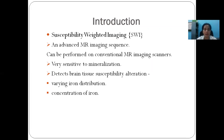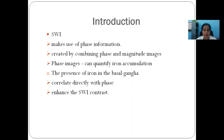For that, we need a highly sensitive sequence like SWI, which is a very advanced MR sequence performed on conventional MR imaging scanners. It is basically based on susceptibility variations between tissues. Minerals like iron, manganese, copper, and calcium interact and distort the local magnetic field, altering the phase of the local tissue, and this phase alteration is detected by the SWI sequence. This sequence makes use of phase information and is created by combining the phase and magnitude images. The phase images can be used to quantify iron deposition, and the presence of iron in basal ganglia correlates directly with phase and enhances the SWI contrast.